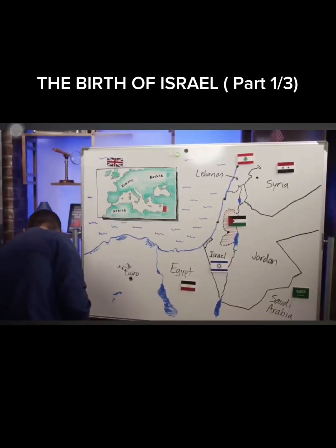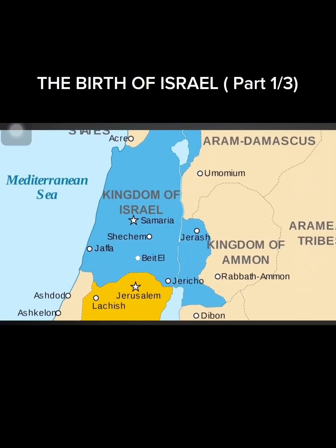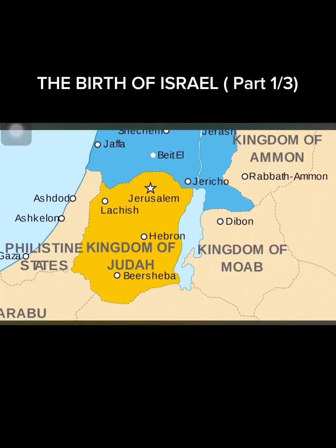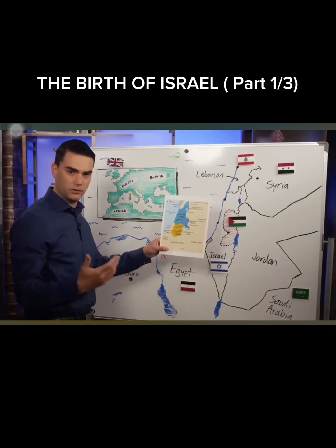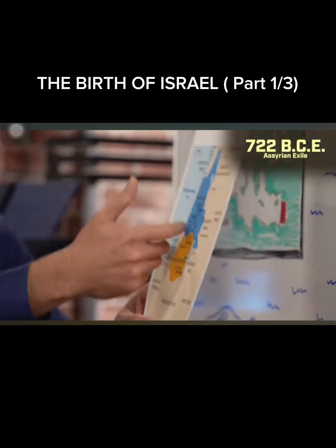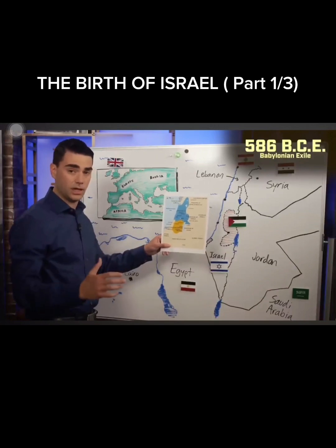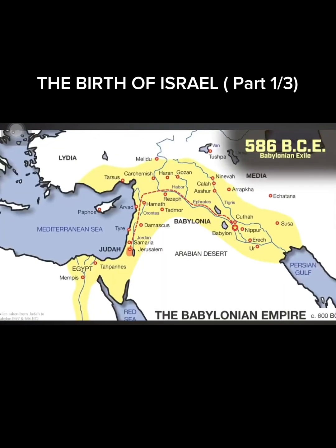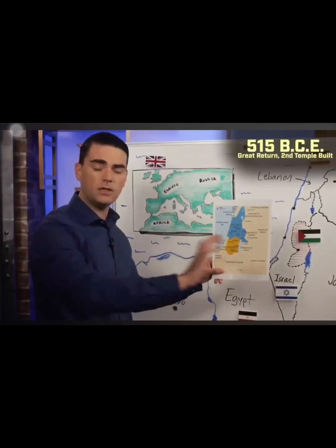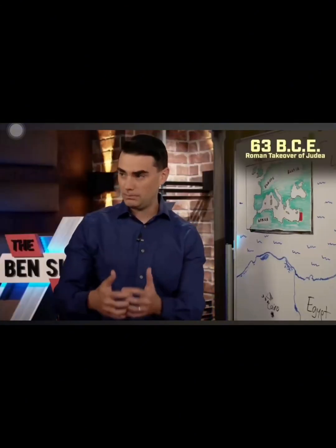Ancient maps show the kingdom of Israel, which comprised 10 of the tribes, and the kingdom of Judah, governed by the Davidic line. The first exile happens in 722 BCE when the Assyrians rush in from the north. Then there's another exile in 586 BCE — the Babylonian exile — when the Babylonians come in, conquer the land, and destroy the first temple. In 515 BCE, there is a great return from Babylonia, and the second temple is built.